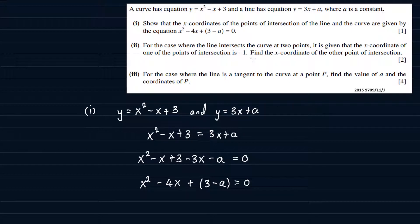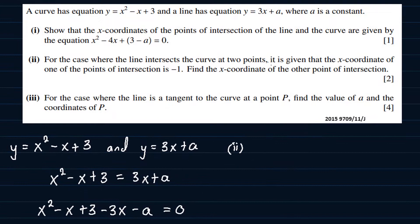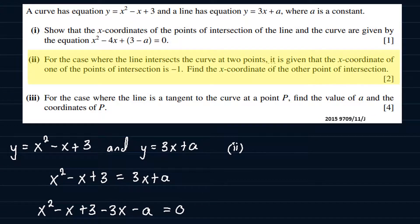And that's the answer to part 1 — that's what they wanted us to show. Part 2: for the case where the line intersects the curve at two points, it is given that the x-coordinate of one of the points of intersection is minus 1. Find the x-coordinate of the other point of intersection.